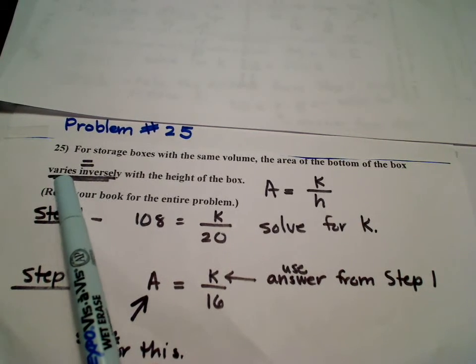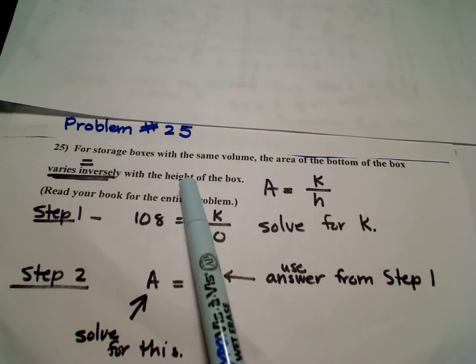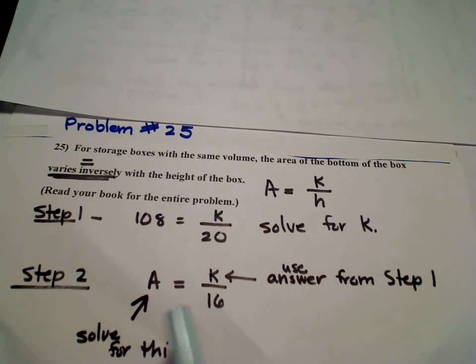Now notice the word varies inversely, which means K is going to be in the numerator and since we're talking about height, height will be in the denominator.